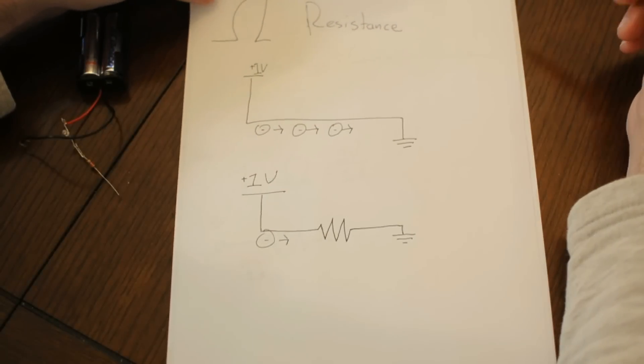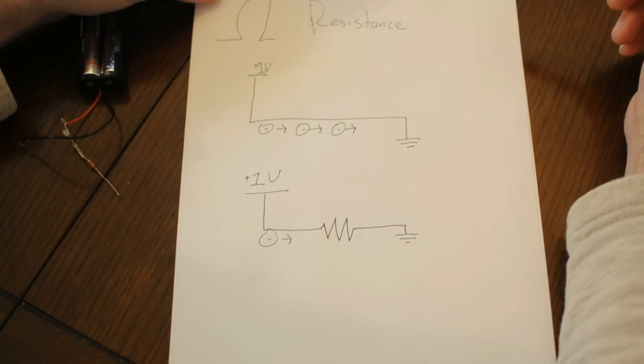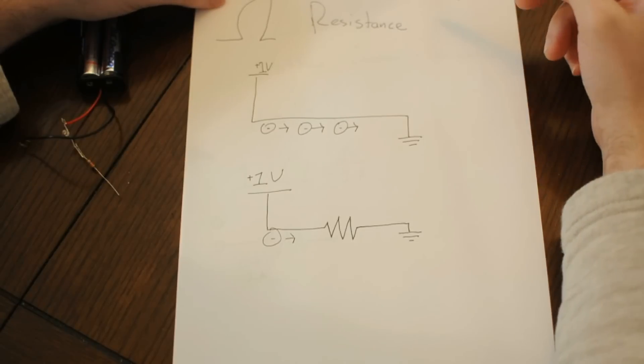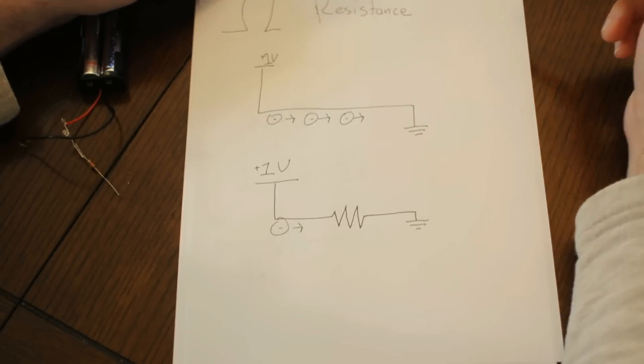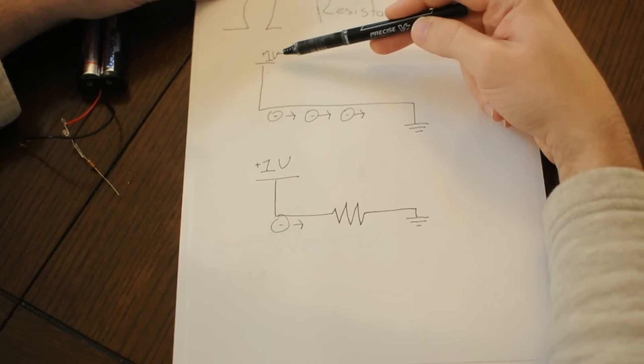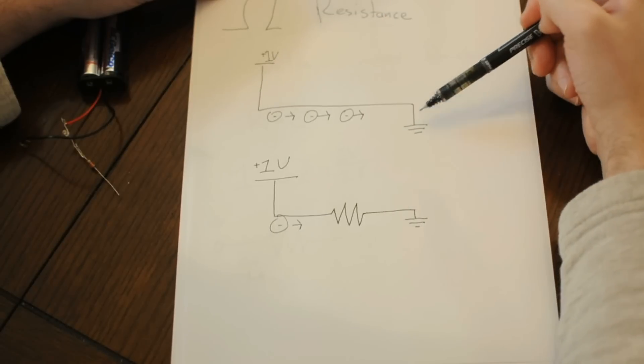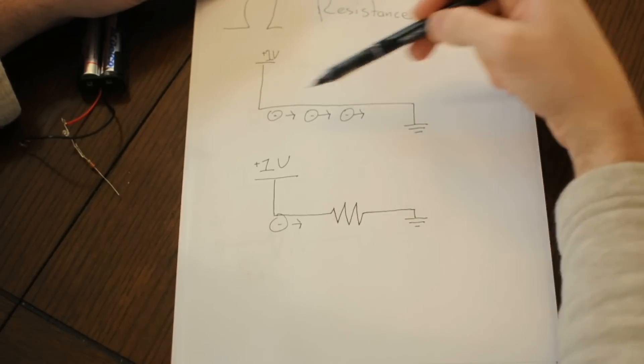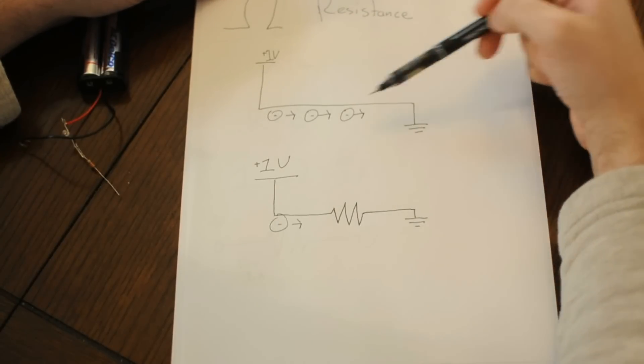So we talked a little bit about work. It's important to measure what that work is, and that work is in the form of resistance. If you take two points, one that has a voltage or potential difference that's one volt higher than the other, and we'll call this ground, and we'll call this one volt, and you connect them to each other,